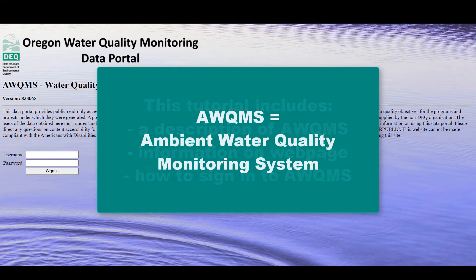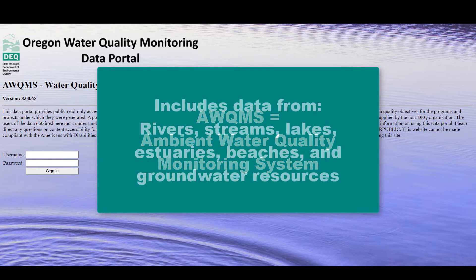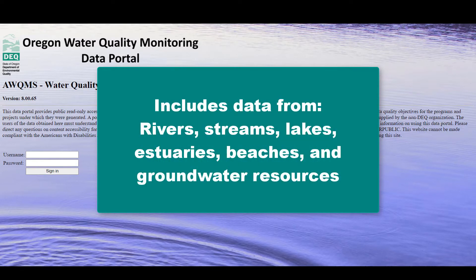First, Aquams, or the Ambient Water Quality Monitoring System, allows for easy access to DEQ and partner data for rivers, streams, lakes, estuaries, beaches, and groundwater resources throughout Oregon.